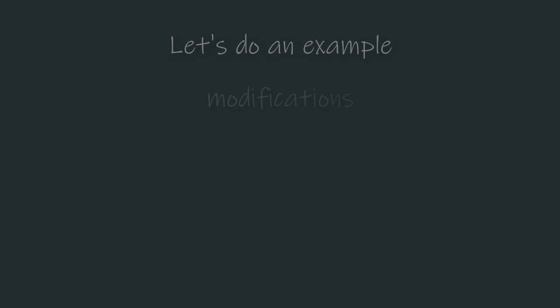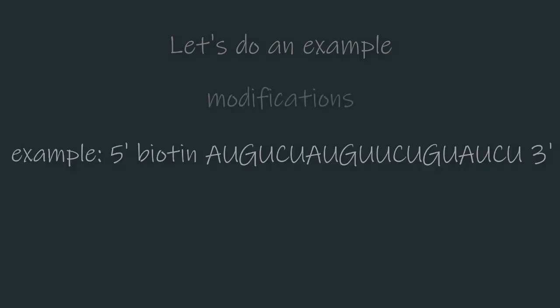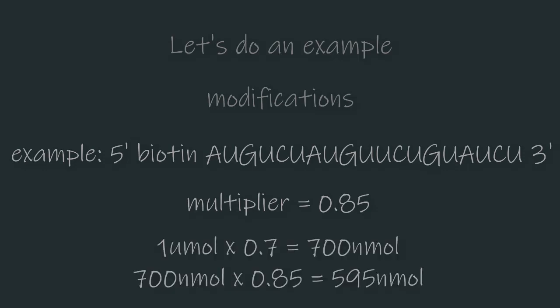Some modifications can also decrease the yield. Let's take a common modification example of a biotin on the five prime end of the oligo. This has a multiplier of 0.85. So we'd expect a final yield of about 595 nanomoles.